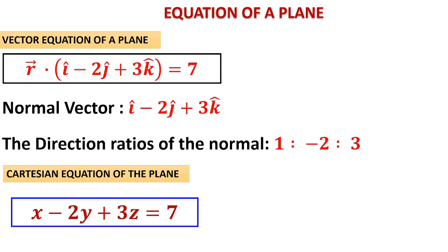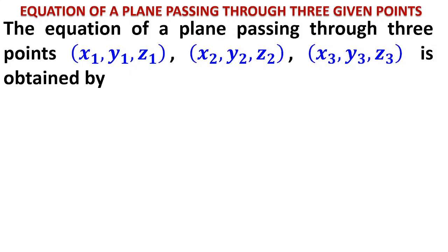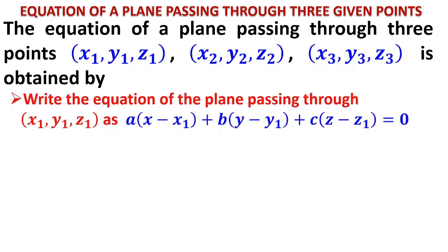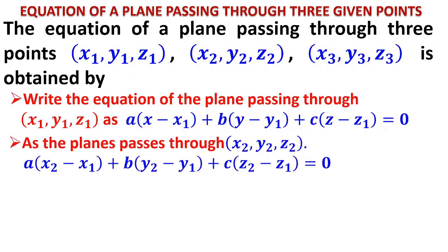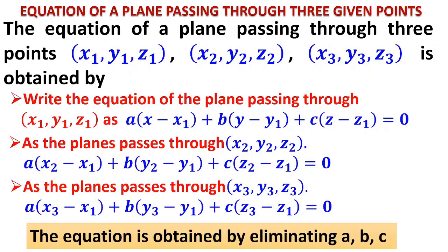To find the equation of a plane passing through three given points: first, write the general plane equation using the first point. Then substitute the second point to get an equation in a, b, c. Substitute the third point to get a third equation in a, b, c. The equation of the plane is obtained by eliminating a, b, c from these three equations.